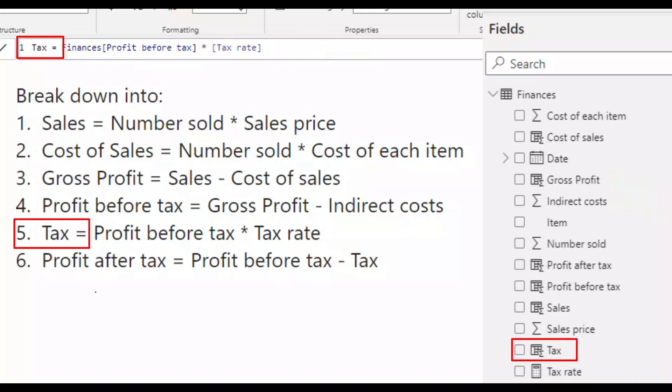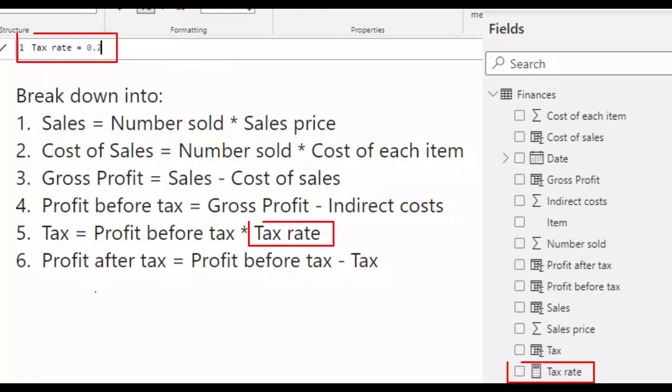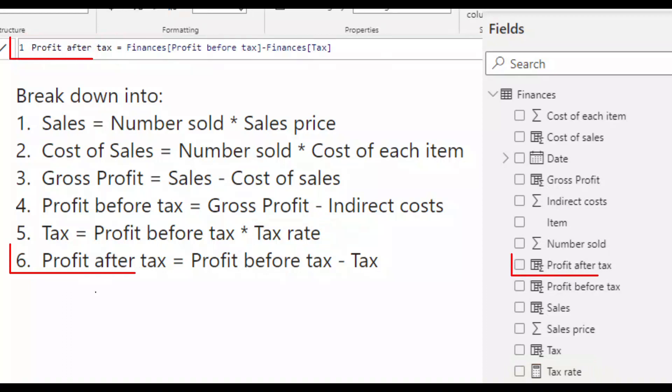For tax, I take the profit before tax from step four and multiply it by the tax rate. The tax rate is contained in a measure called tax rate, which is currently set to 20%. Then profit after tax is the profit before tax column created at step four minus the figures in the tax column created at step five.